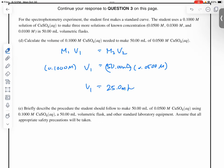Okay, but describe the procedure that students should follow to make 50 milliliters of 0.05 molar CoSO4 using the 0.1 molar CoSO4, a 50 milliliter volumetric flask, and standard lab equipment. Assume that all appropriate safety precautions will be taken. So the key points that you want to mention would be,